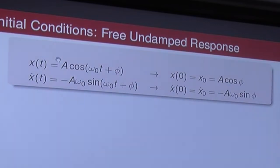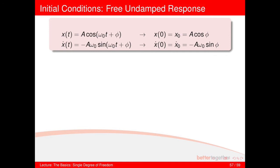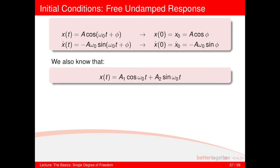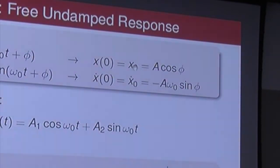If you take the derivative of this equation, an omega-zero comes out and the cosine turns into a minus sine, giving minus A omega-zero sine of (omega-zero t plus phi). Plugging in zero for t gives minus A omega-zero sine of phi, which is x-dot subscript zero. The alternative solution form is a1 cosine(omega-zero t) plus a2 sine(omega-zero t), where a1 equals A cosine phi, which is clearly x-zero.